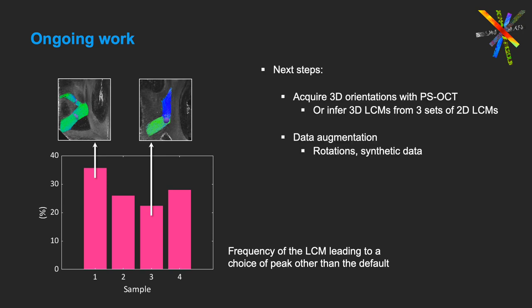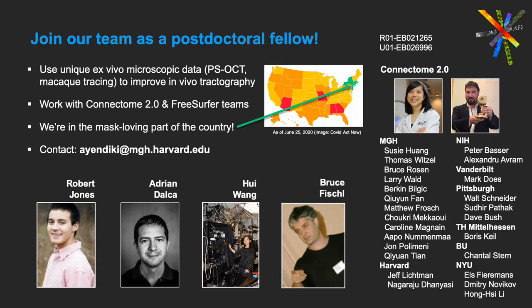Next steps include modifying our PSOCT setup to measure 3D orientations, or alternatively inferring 3D LCMs from three sets of 2D LCMs, as well as various improvements to the CNN, such as data augmentation — which can range from simple rotations to using the optical data as our starting point to synthesize a broader range of realistic fiber configurations. I would like to end by thanking my co-authors as well as the Connectome 2.0 project for partly supporting this work. If you want to do your postdoc with us working on this and other exciting projects, drop me a line. Thank you very much for your attention.